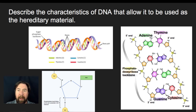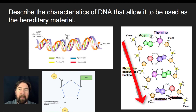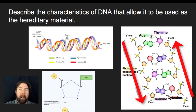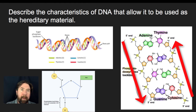Another key feature is that the two strands of the double helix run anti-parallel. One strand has the five prime end at the top and the three prime end at the bottom; the complementary strand runs five prime to three prime in the opposite direction. New nucleotides can only be added to the three prime end, and this has important consequences when we get into DNA replication.